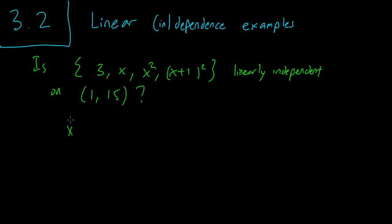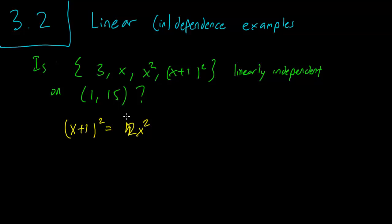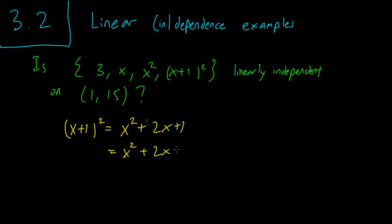So let's write down (x+1) squared. That expands out to x squared plus 2x plus 1. But you can write it as x squared plus 2 times x plus one-third of 3.